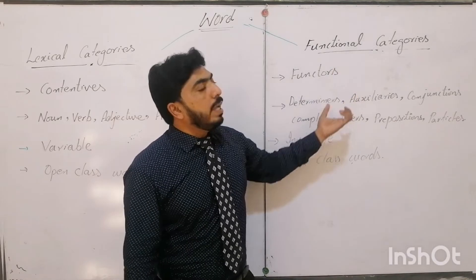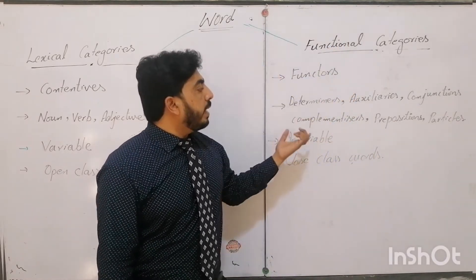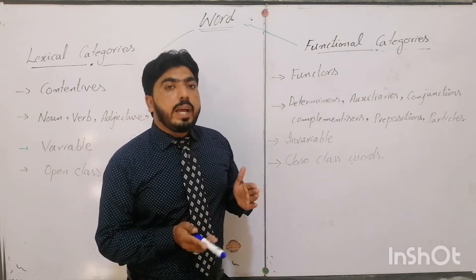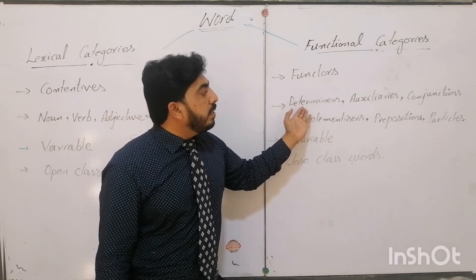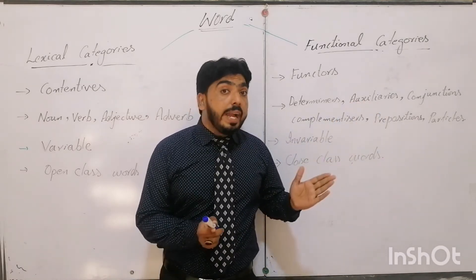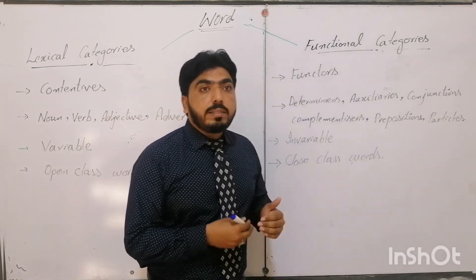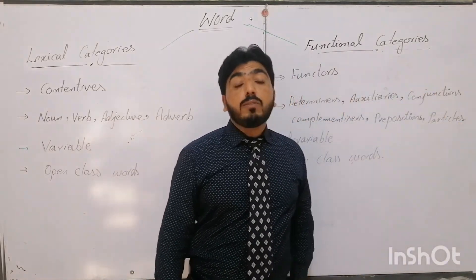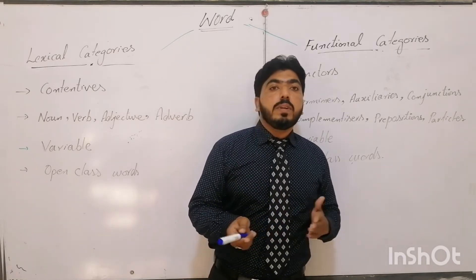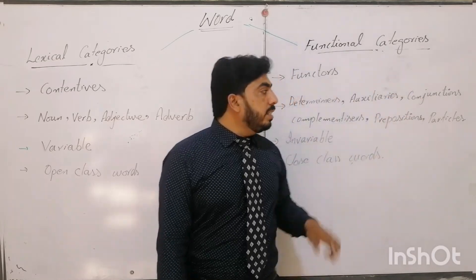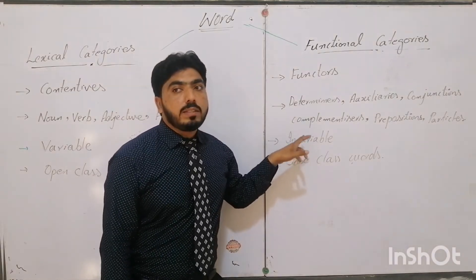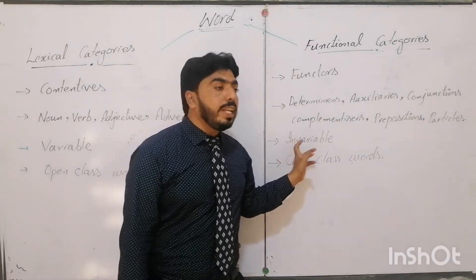On the other hand, we are unable to add prefixes or suffixes to functional categories. For example, determiners — this, that, a — these articles remain the same. We are unable to attach any prefix or suffix to these functors. The same is true of auxiliaries like is, am, are, was, were, has, have, had. We can't add a prefix or suffix to these auxiliaries. The same applies to conjunctions such as the FANBOYS coordinating conjunctions — for, and, nor. So, functional categories are invariable: we can't bring any kind of change to functional categories.